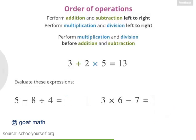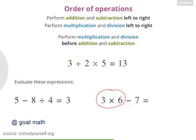Excellent work! First, you divided 8 by 4 to get 2, and then 5 minus 2 equals 3. And over here, 3 times 6 is 18, and then subtracting 7 gives you 11.